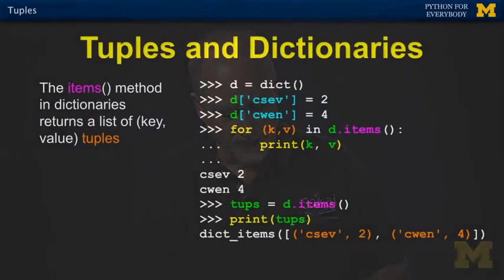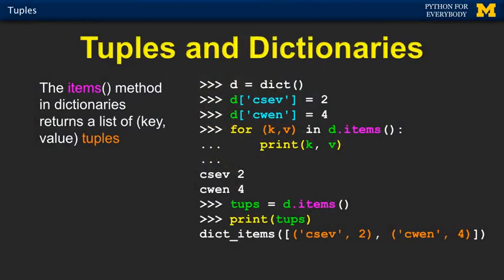We've actually played with this already without even knowing it. The way this works is if you remember d.items() — items gives you a list of tuples. So this dictionary has two things: csev maps to 2 and chen maps to 4.